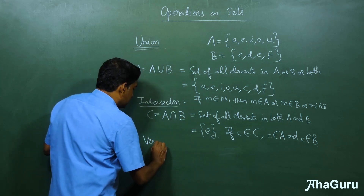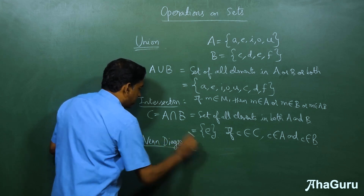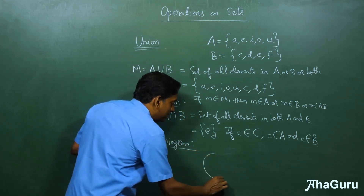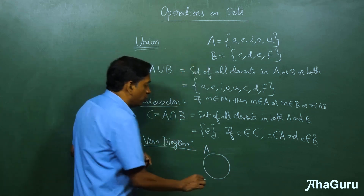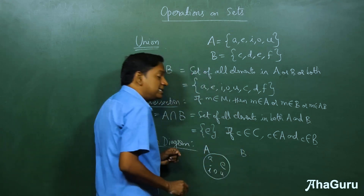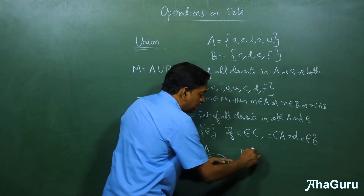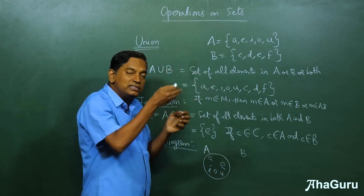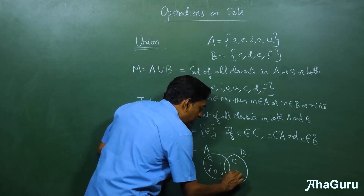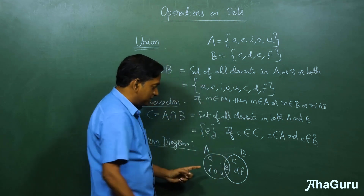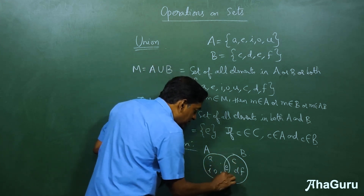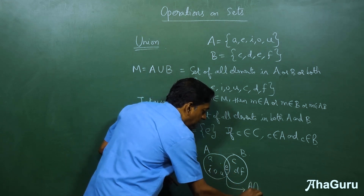A Venn diagram represents the elements of multiple sets with overlapping circles. If set A has A, E, I, O, U and set B has C, D, E, F — rather than drawing separate circles, we overlap them to show that E is common to both. So C, D and F appear only in B's region, while E sits in the overlapping part to show it belongs to both set A and set B.